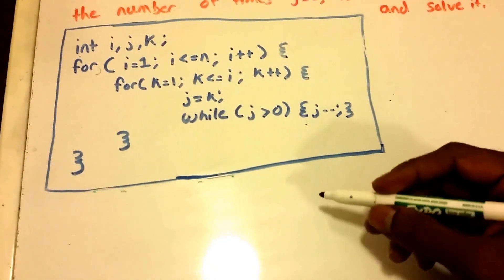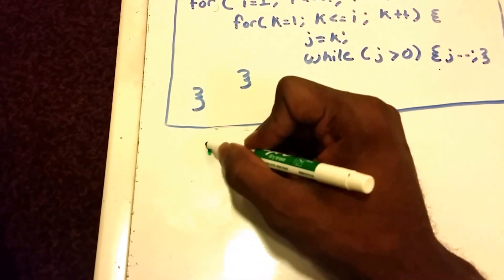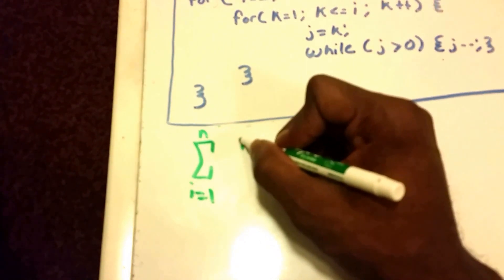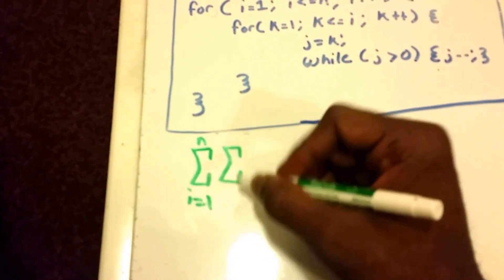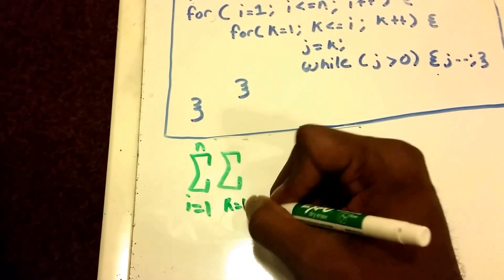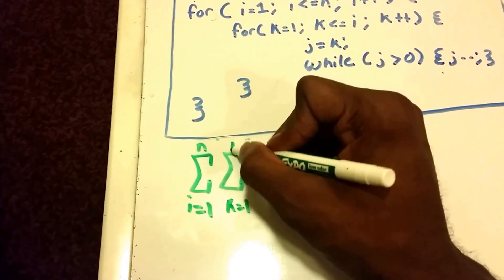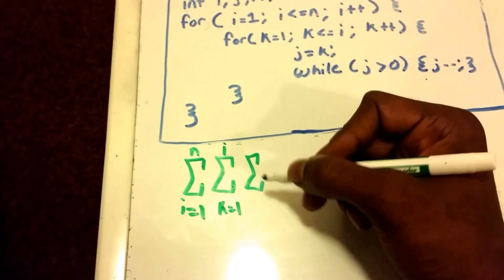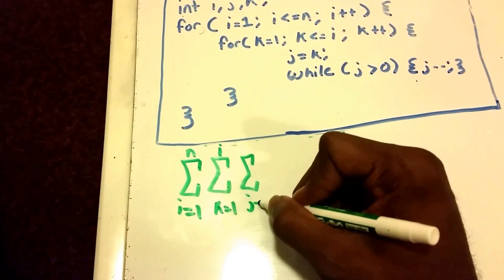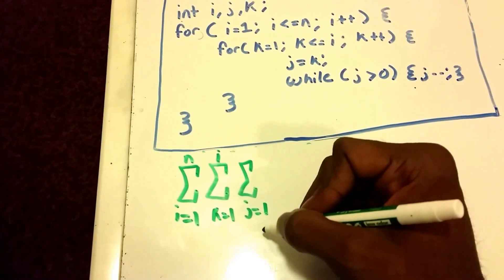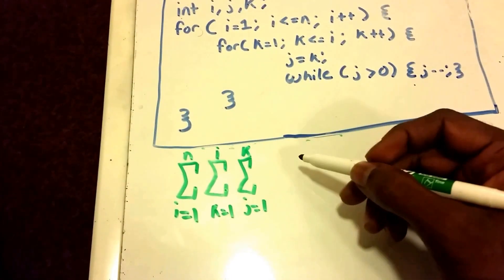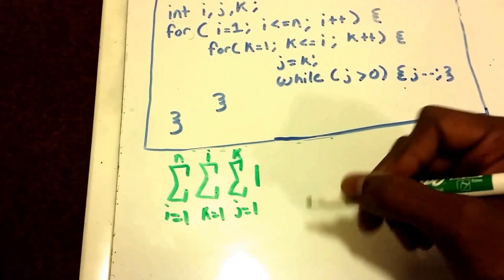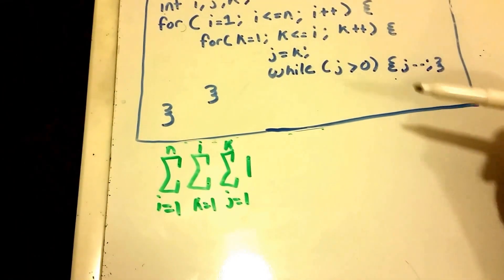So let's first write this as a summation. The first loop runs from i equals 1 to n. Within that loop is another loop, so we write another summation from k equals 1 up to i. Within that, we have our while loop — this is a bit trickier, but I have a previous video on this. It runs from j equals 1 all the way up to k. The j-- statement executes a constant amount of time — just 1, since it's a single statement.